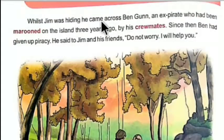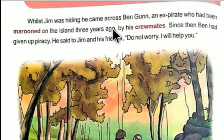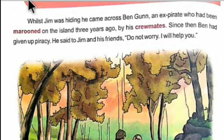Whilst Jim was hiding, he came across Ben Gunn, an ex-pirate who had been marooned on the island three years ago. Jim Hawkins came across this person, Ben Gunn, who was also a former member of Flint's crew. He had been marooned — left alone and isolated — there by the crew members and had been living there for three years.